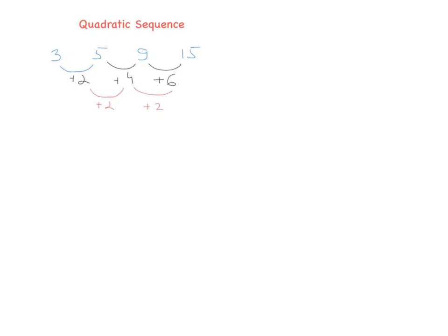Now we know what the first and second differences are, but how do we find the next few terms? We use the key information that the second difference is constant — it's plus 2 every single time. So we add 2 to the first difference to get plus 8, and then 15 plus 8 is 23.